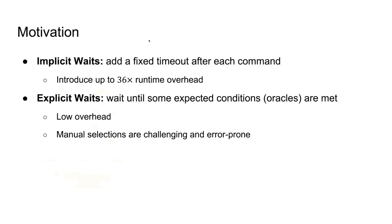An alternative and more preferred approach in the community is explicit waits, which means waiting for some expected conditions to be met. For example, checking for the presence of an element before the command that attempts to access it. It is found to have low overhead, but the manual selection of expected conditions is challenging and error-prone.